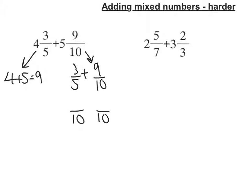So that means for this first fraction here, to get from 5 to 10 I had to multiply by 2, so I must multiply the 3 by 2, that comes to 6. And the second one, well 10 and 10 are the same, so it's just 9 tenths.